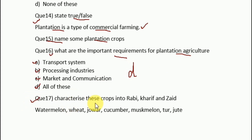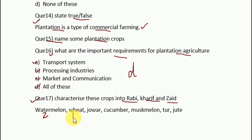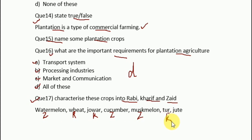Question number 17, which came in previous board exams: classify and characterize crops as rabi, kharif, or zaid. Make a table with three columns. Watermelon — zaid crop. Wheat — rabi crop. Jowar — kharif crop. Cucumber — zaid crop. Musk melon — also zaid crop. Remember: watermelon, musk melon, and cucumber are all zaid crops. Toor dal — also kharif crop. Jute — also kharif crop. This is your classification.